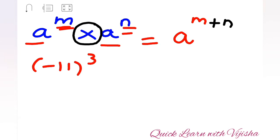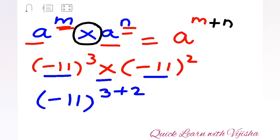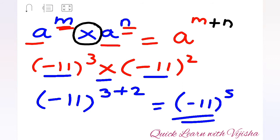Let's see with a proper example. The question is: (−11) raised to 3 multiplied by (−11) raised to 2. First we check — it is a multiplication question and both bases, minus 11 and minus 11, are the same. So we add the indices: (−11) raised to (3 + 2), which gives us (−11) raised to 5. That is your answer as per the law of indices.